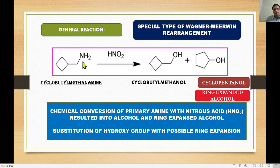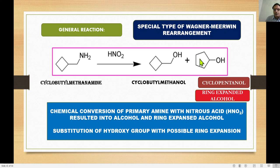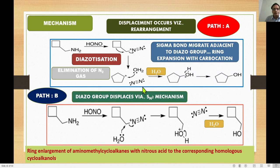Here, cyclobutyl methanamine reacts with nitrous acid followed by treatment with water, resulting in cyclobutyl methanol and cyclopentanol as a ring-expanded product. The starting material has a four-membered ring and the rearranged product has a five-membered ring, with NH₂ simply replaced by OH — giving a mixture of products.